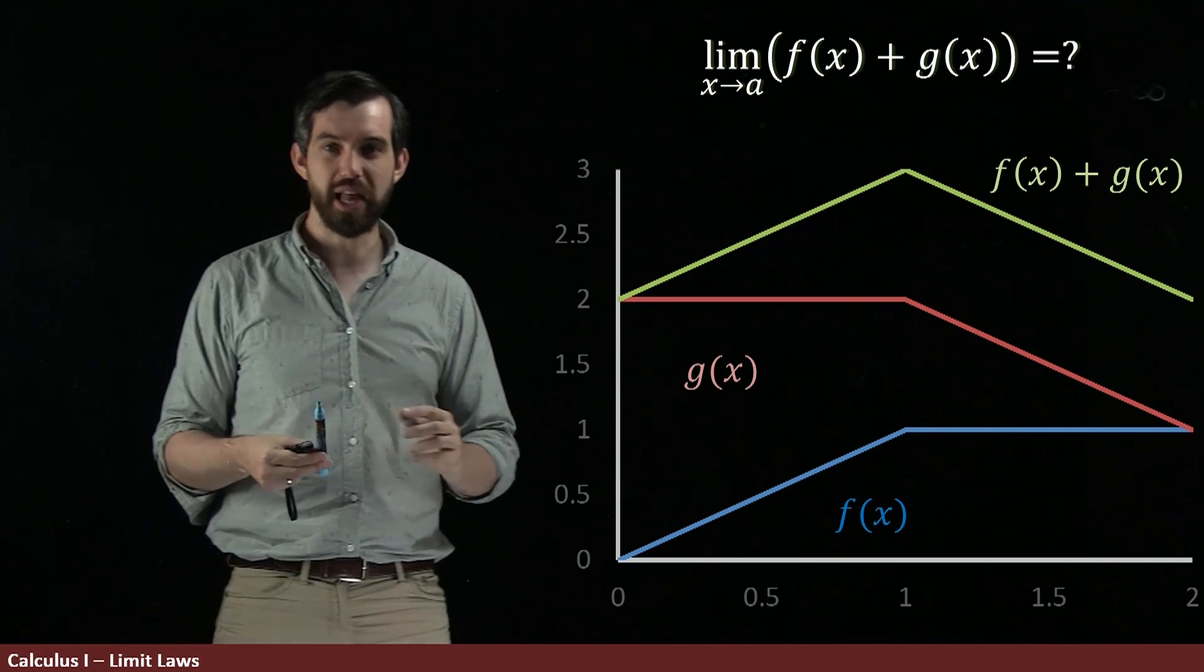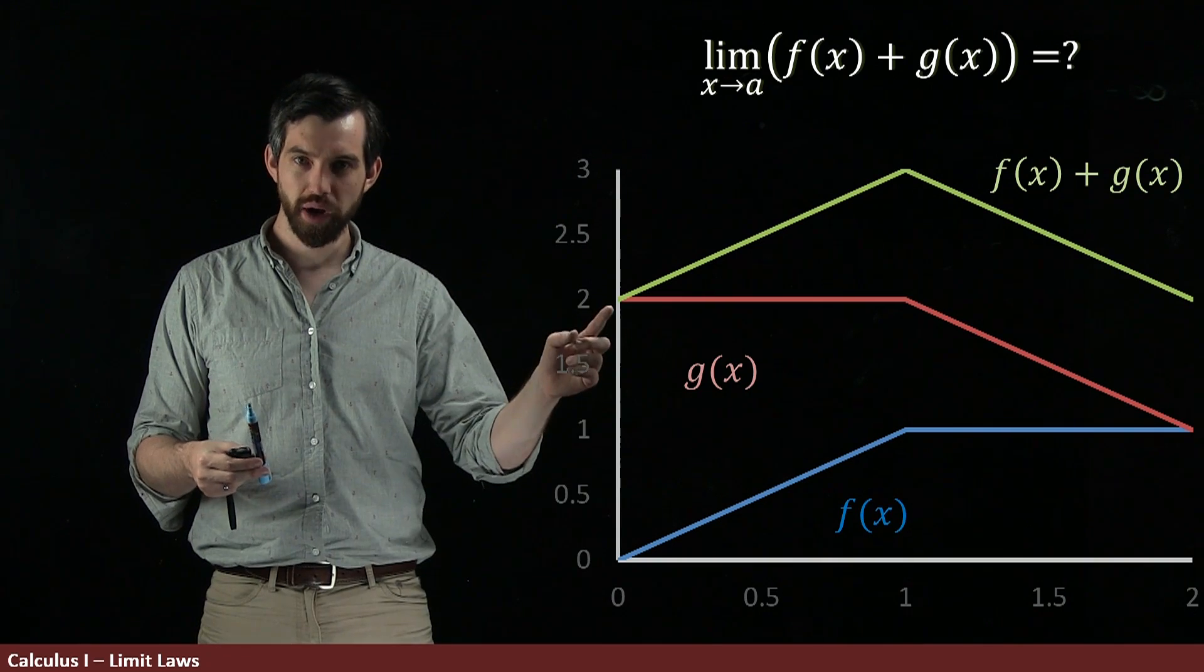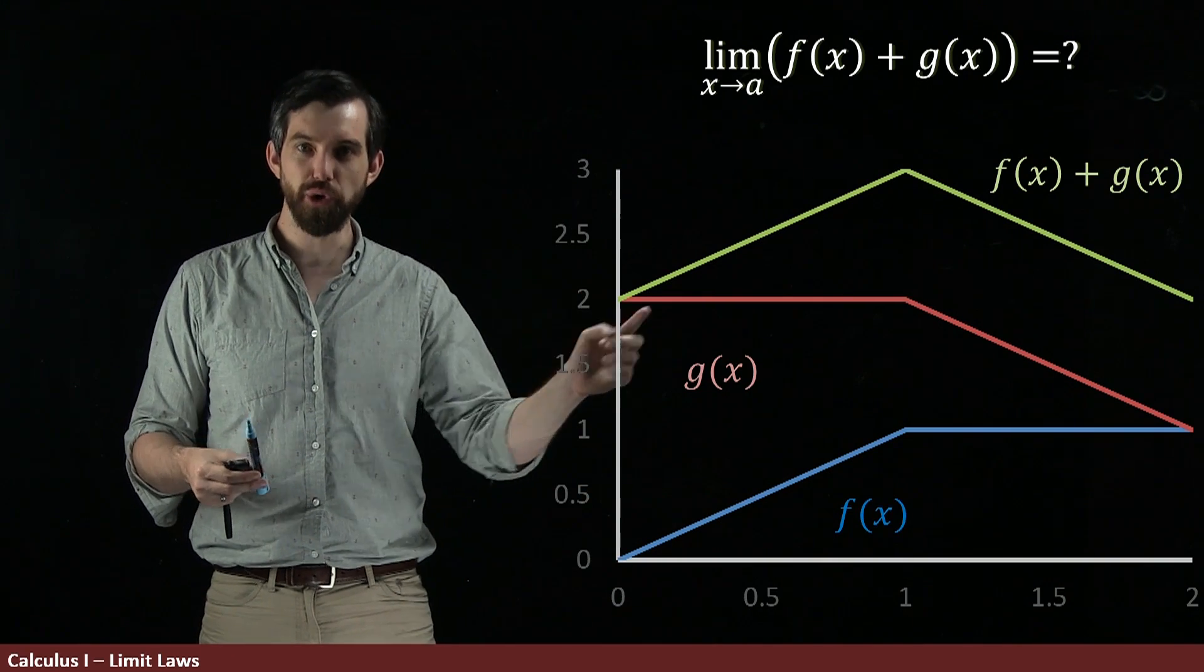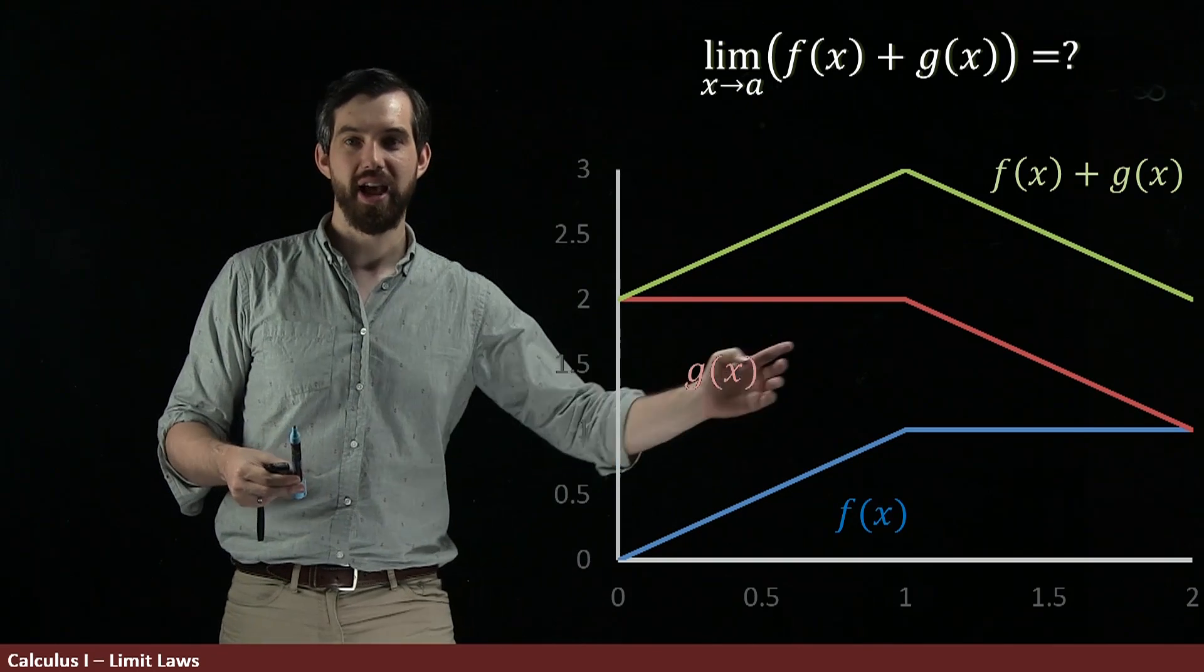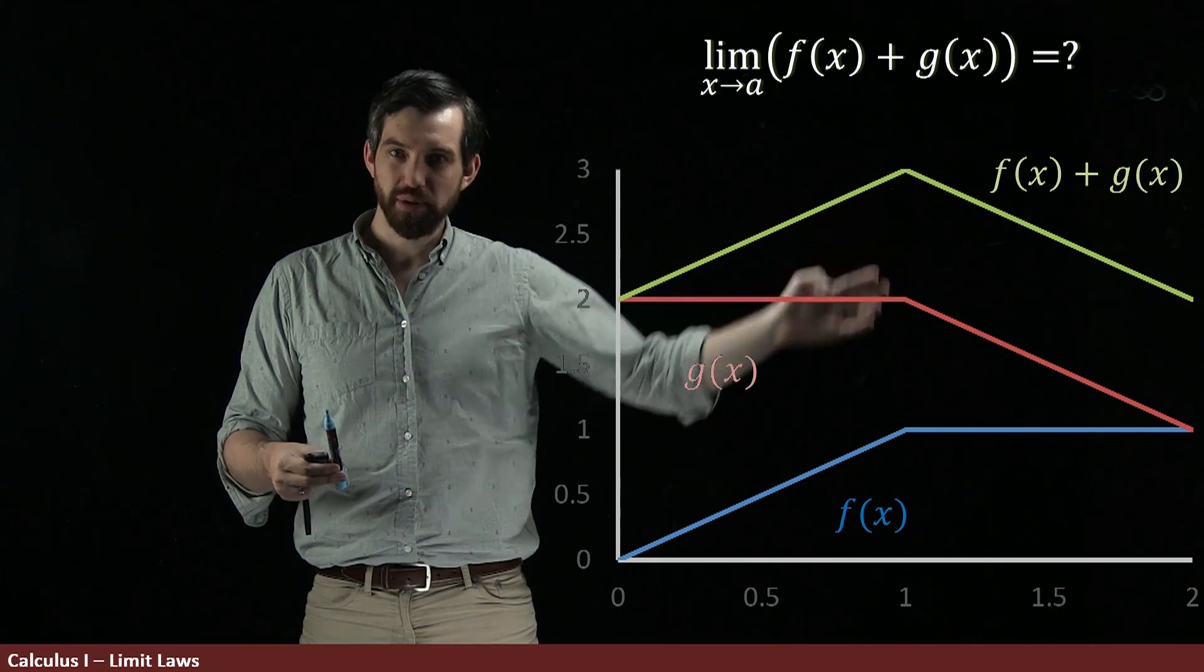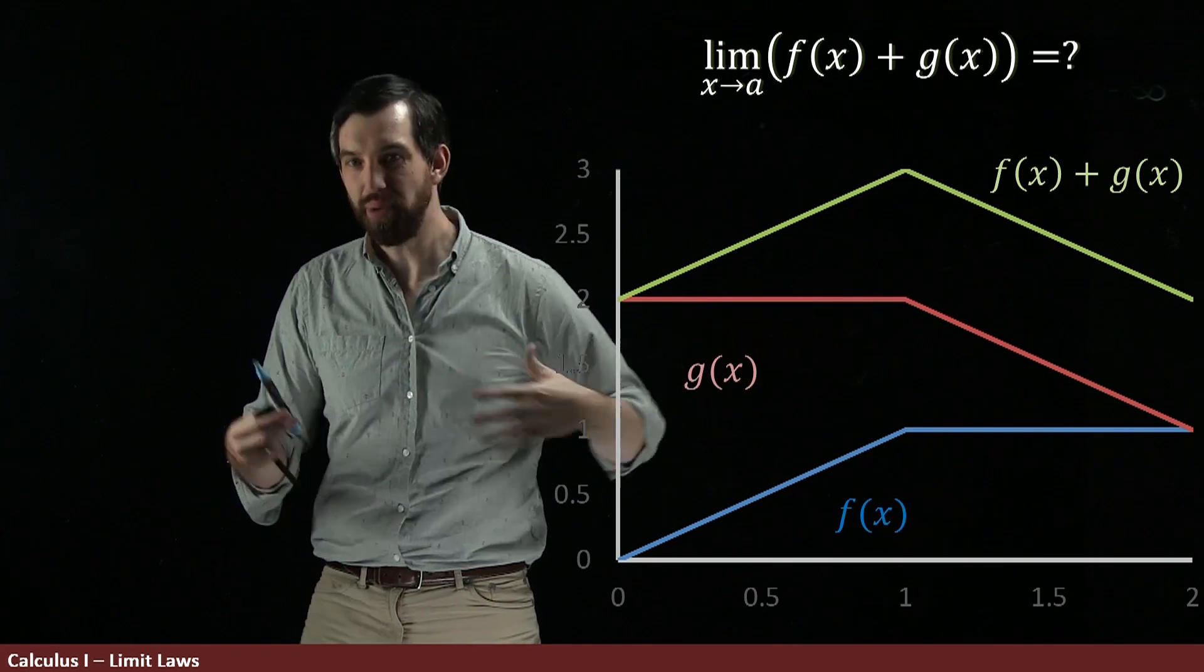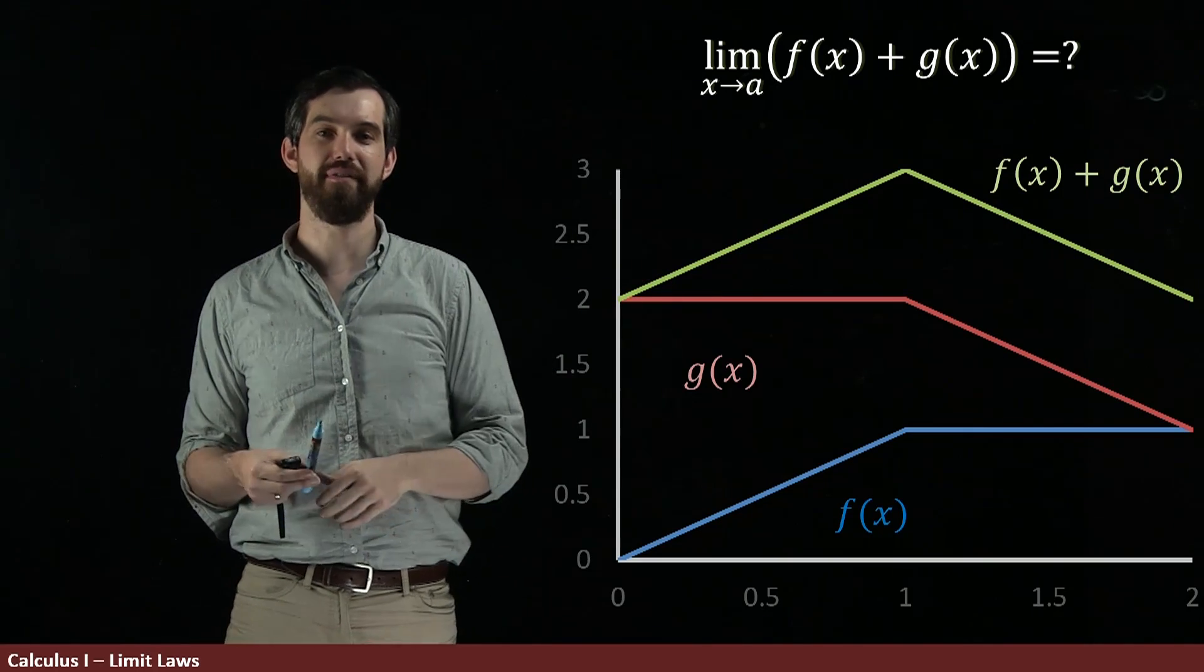And you'll notice, for example, that if I take the value of f at 0, which is 0 plus 2, 0 plus 2 is 2, so the start of f of x. Or here, it looks like this is height of 1, and then we've got a height of 2, and then we've got a height of 3, which is 1 plus 2. So indeed, everything seems to work out relatively nicely. That is indeed the graph of f of x plus g of x.